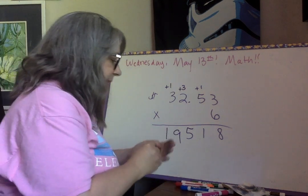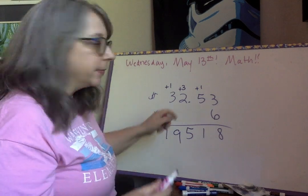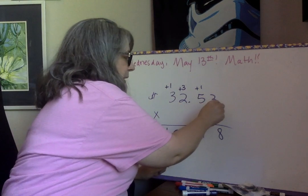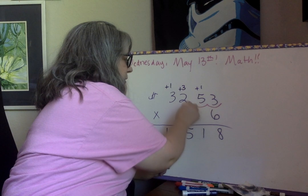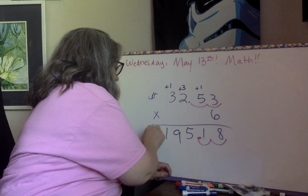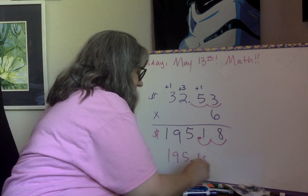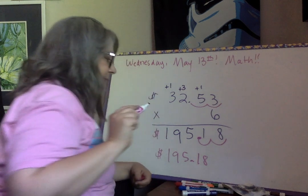All right? Let's make our hops. How many hops are we going to make? Are there any decimals down here? There's a decimal right there. So how many hops are we going to make? One, two. One, two. So our answer is $195.18.